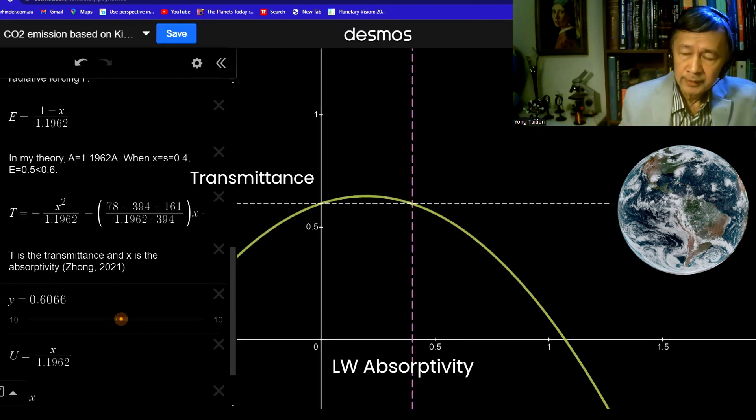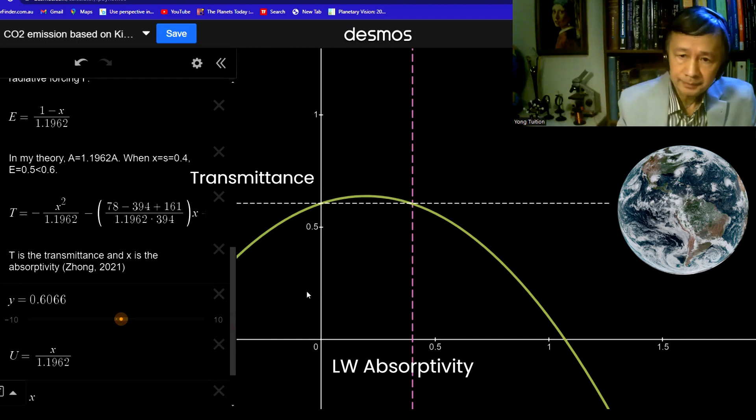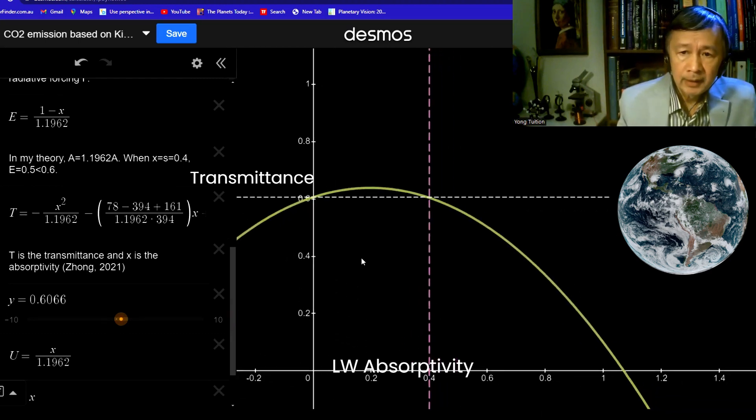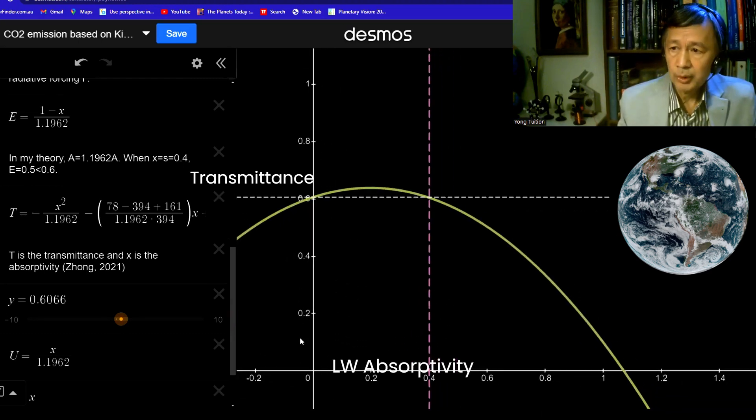So this green curve is the calculated transmittance or transmissivity of atmosphere as a function of the absorptivity of the atmosphere. It is actually a parabola, as you can see. Now this time, the vertical axis represents the transmittance, the percentage of the transmitted surface radiation at the top of the atmosphere.